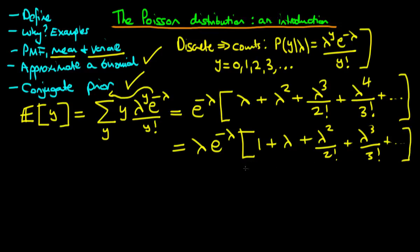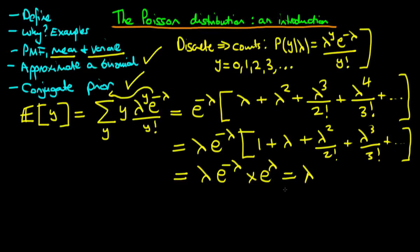We recognize the series inside the parentheses as the Taylor series expansion of e to the power lambda. So we get lambda times e to the power minus lambda times e to the power lambda, and the minus lambda and lambda cancel, leaving the mean equal to lambda. This proves that lambda is the mean rate of occurrence of the events being counted.